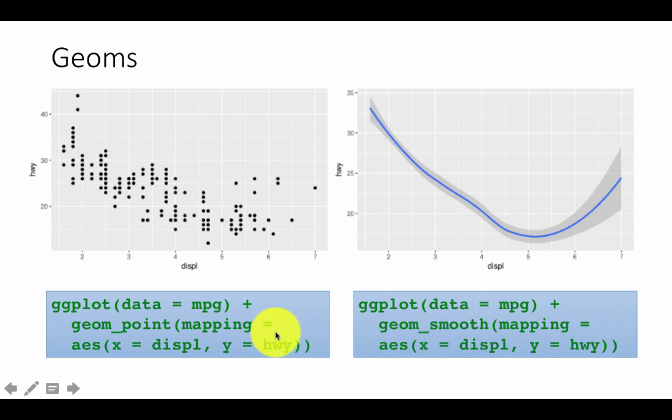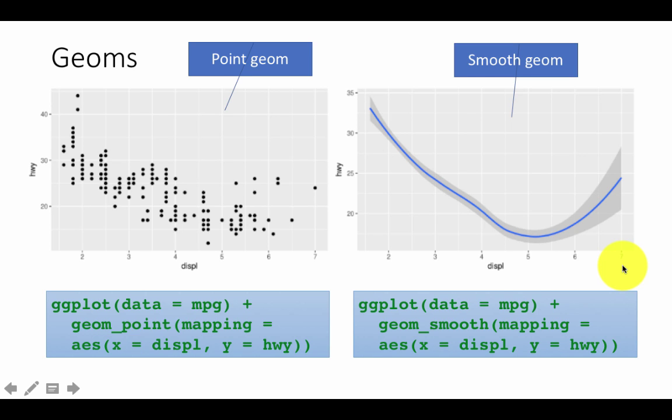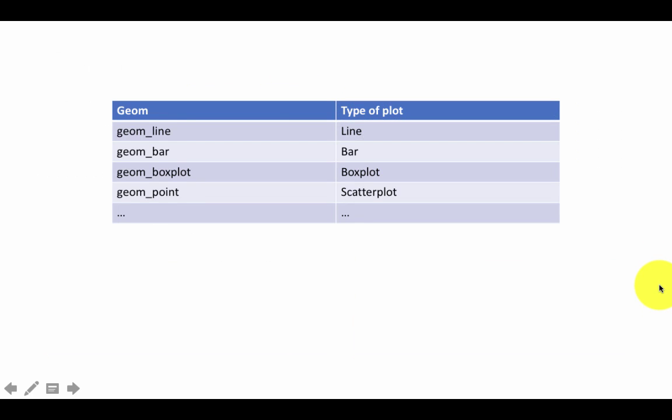So that's geom_smooth. So you can have the same aesthetics, but if you change the geom, then the graph that appears would be different. So that uses the point geom, which is the scatter plot, smooth geom, which gives the smooth line. So clearly there are many, many geoms in ggplot. I think 20 or 30 different geoms.